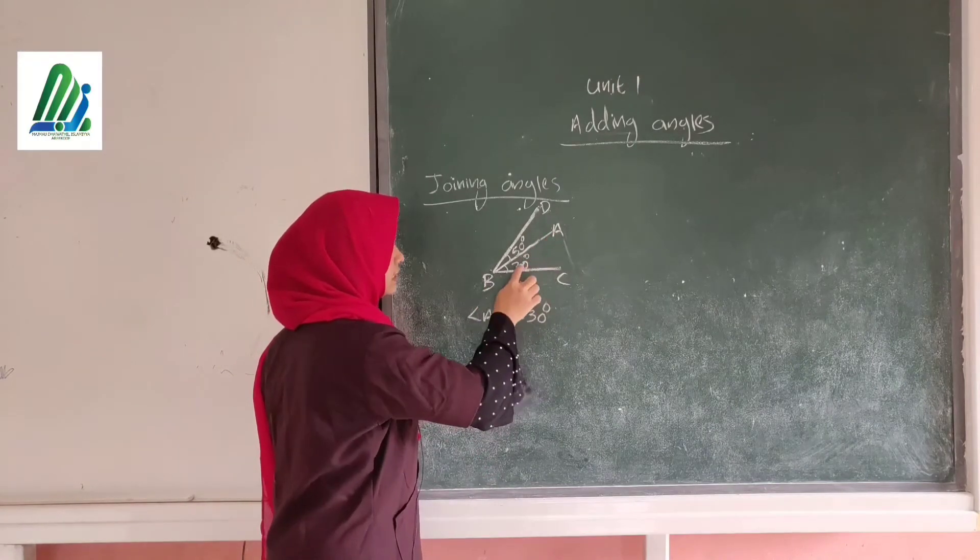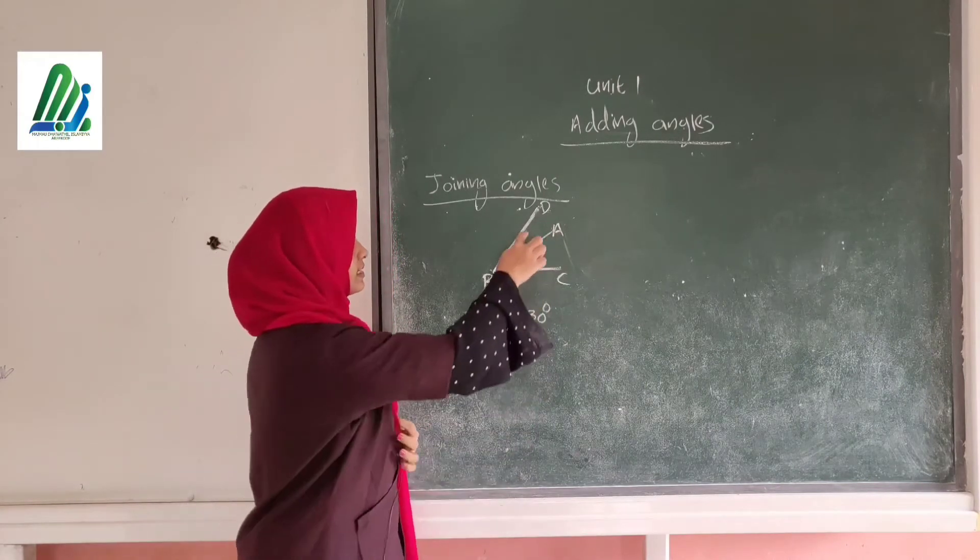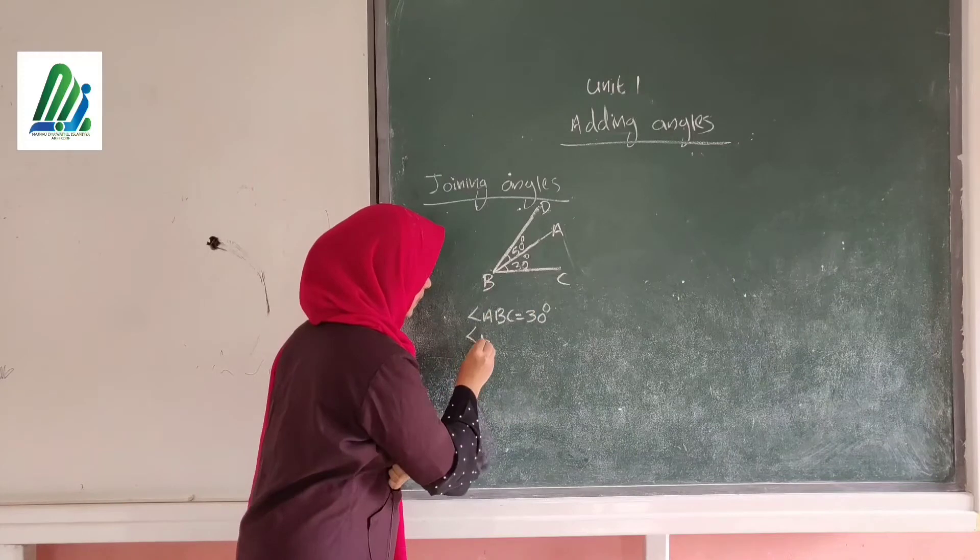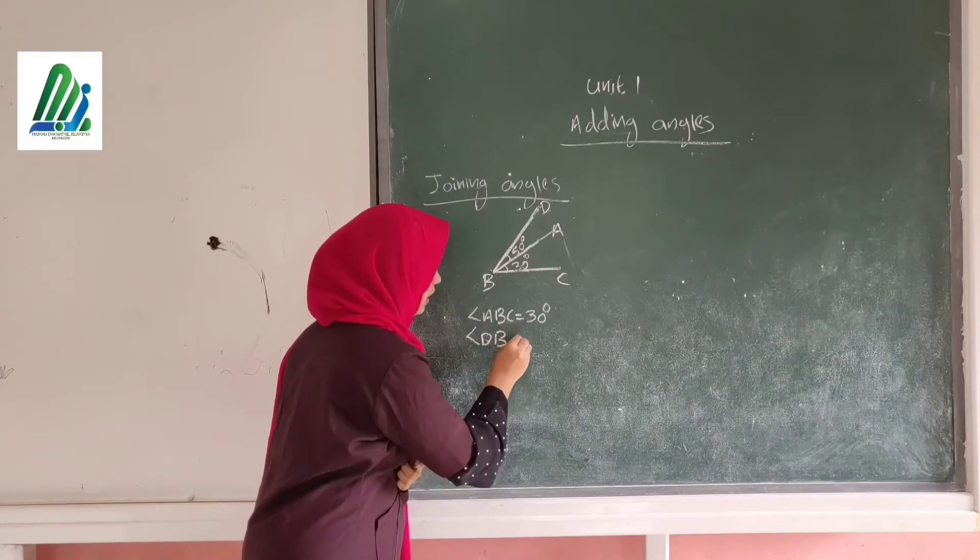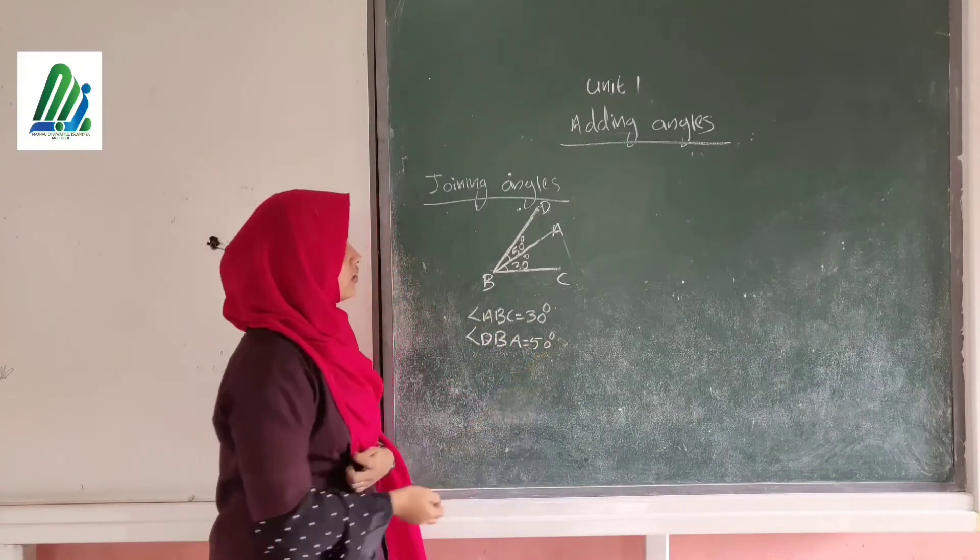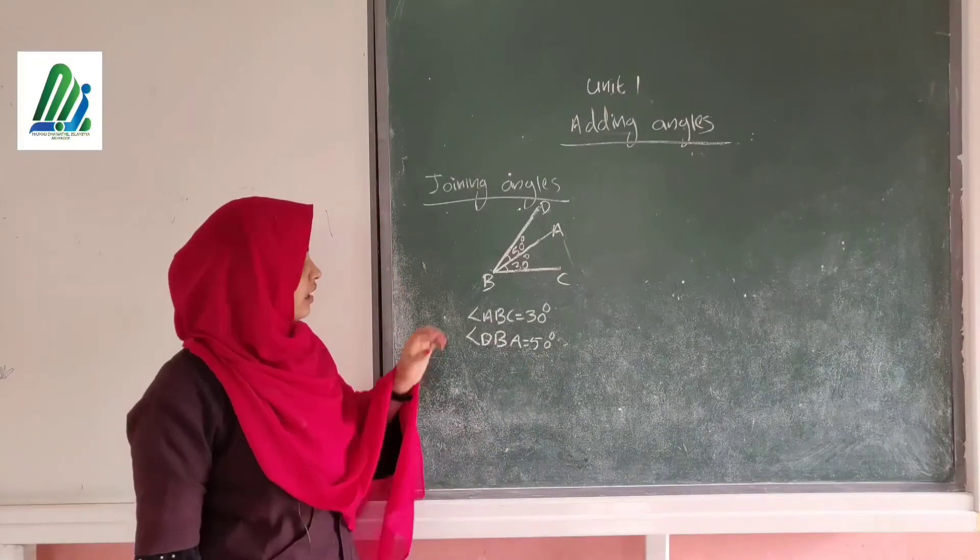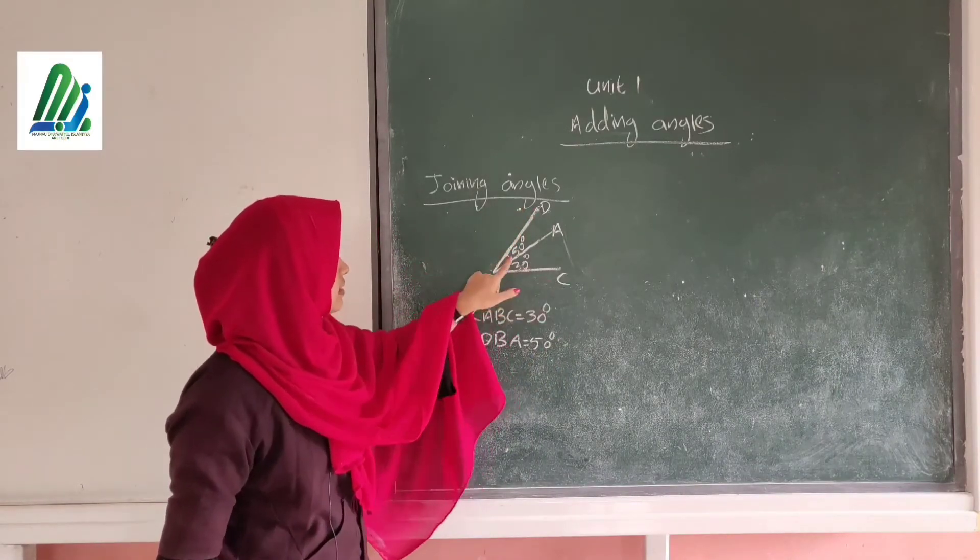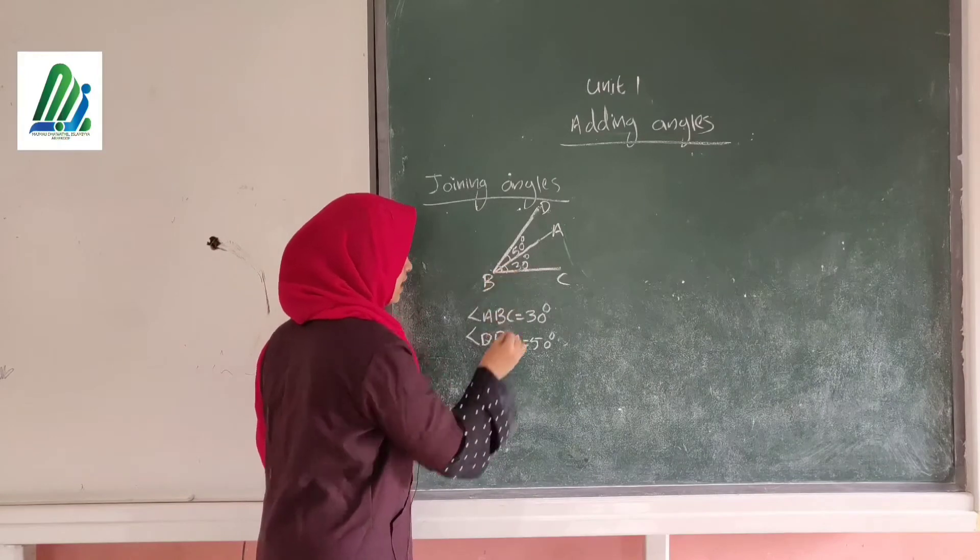The first angle is angle ABC, 30 degrees. The second angle is angle DBA. See, 50 is given. So can you see the one more large angle? Angle DBC. This large angle, angle DBC.